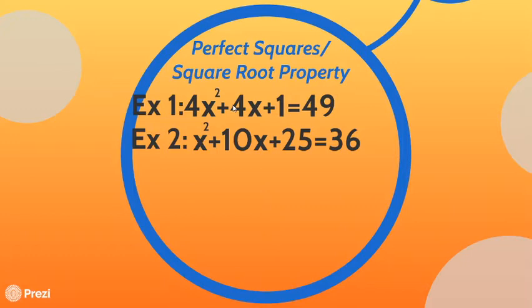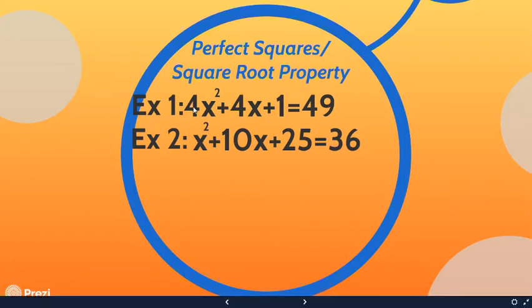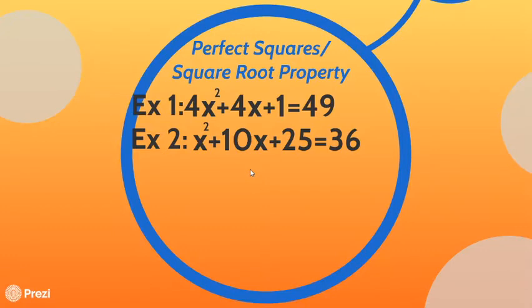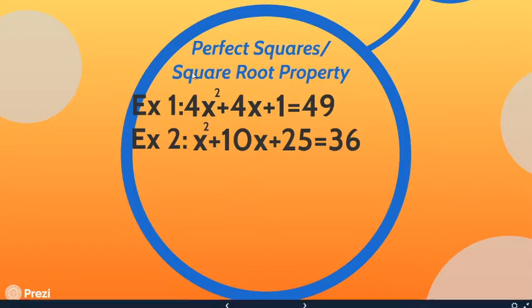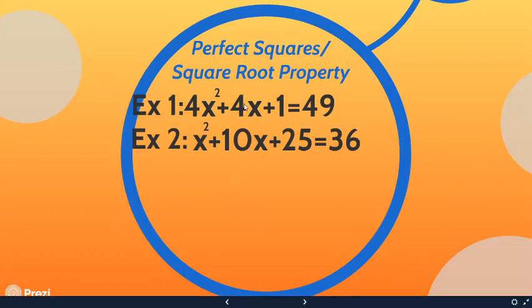The square root property is simply solving when you have to take the square root of both sides of your equation. The last time we used it, you just started solving for x — but you can only do that if you only have the quadratic term and the constant term. If you have the linear term, which is when x is to the first power, you cannot just solve for x. We're going to have to factor first.